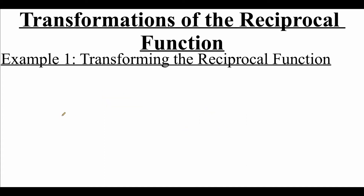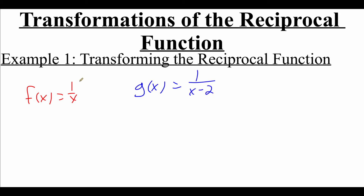So we're going to look at performing some transformations with that reciprocal function. Our f of x is that 1 over x reciprocal function, but I want to think about the function g of x equals 1 over x minus 2. We can actually think about this g of x function in terms of f of x — notice on the bottom where we had the x, we replaced it with x minus 2, so we can think about g of x as being f of x minus 2. Because we're subtracting 2 directly from the x value, this is a horizontal shift, and horizontal shifts are always backwards of the way you would expect. So this minus 2 actually moves our graph to the right two spaces.